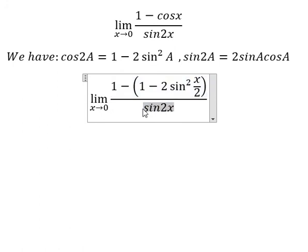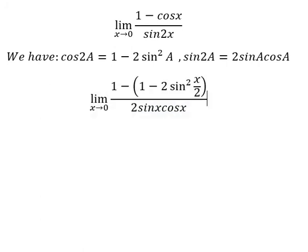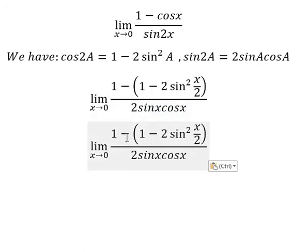This one we have 2 sine x cosine x. 1 minus 1, we can solve negative negative, we have positive.